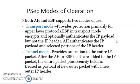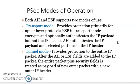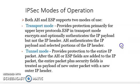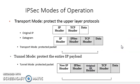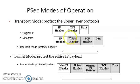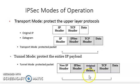Looking at the figure: in transport mode, the original IP header, TCP header, and data are present. The transport mode protected packet has the IP header, IPsec header, TCP header, and data. For tunnel mode, it protects the entire IP payload — a new IP header is added along with the IPsec header and the original IP header.